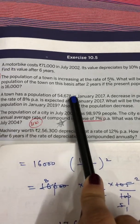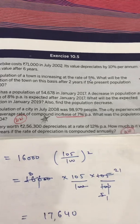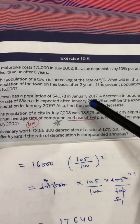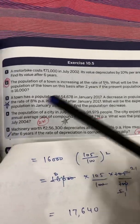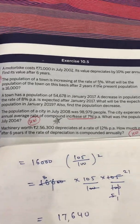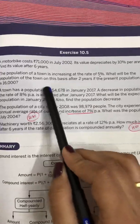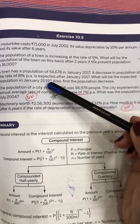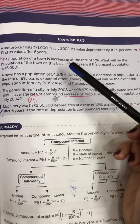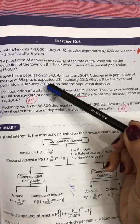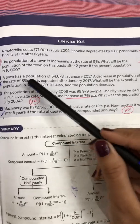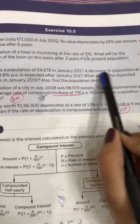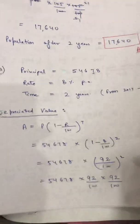Next question: A town has a population of 54,678 in January 2017. A decrease in population at the rate of 8% per annum is expected after January 2017. What will be the expected population in January 2019? Also find the decrease in population. The time from 2017 to 2019 is two years, so: Principal = 54,678, Rate = 8%, Time = 2 years.